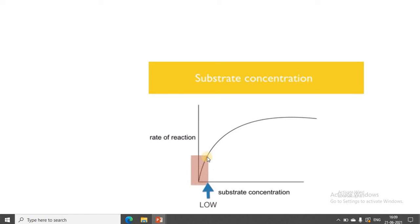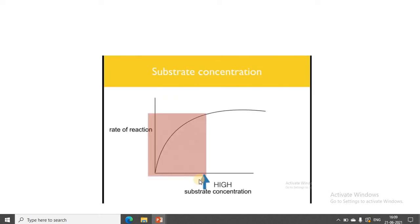The enzyme activity is very fast at low concentration of substrate. Later, when the substrate concentration increases, enzyme activity also increases. Initially it increases very fast, then it increases more slowly as concentration continues to rise.